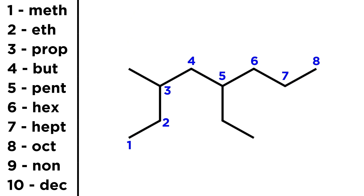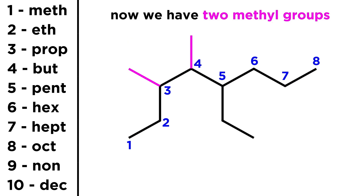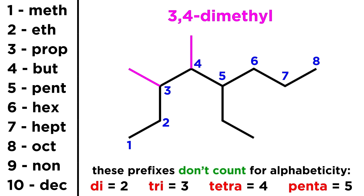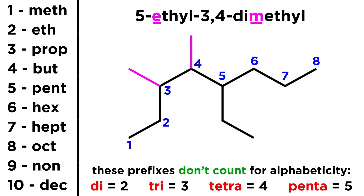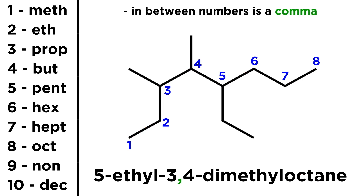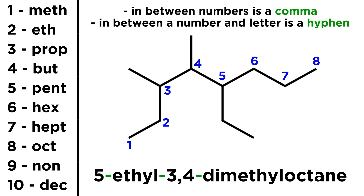Now for another example, let's make a slight modification to this molecule and add a methyl group on carbon 4. This means there are two methyl groups on this molecule. When there are multiple occurrences of the same substituent, we report them all at the same time, simply by listing multiple numbers and adding a prefix to indicate how many of that substituent there are. In this case, that will be 3,4-dimethyl. Another important rule is that these prefixes — whether di for 2, tri for 3, tetra for 4, and so forth — will not be considered when listing substituents in alphabetical order. In other words, it is still E for ethyl before M for methyl, instead of D for dimethyl going first. That gives us 5-ethyl-3,4-dimethyloctane. Notice that in between numbers there is a comma, and in between a number and a letter is a hyphen, with no spaces anywhere.